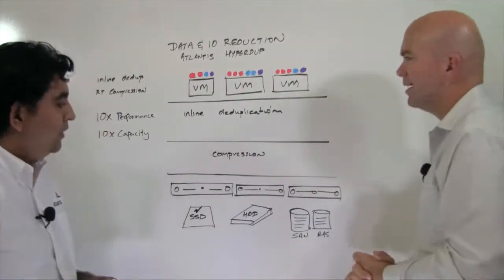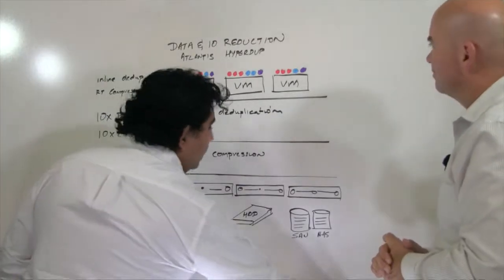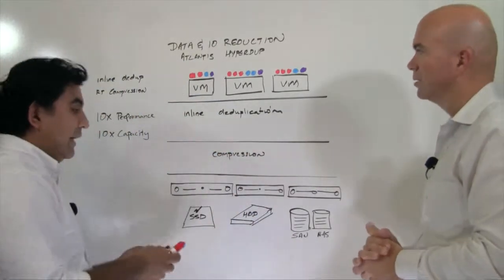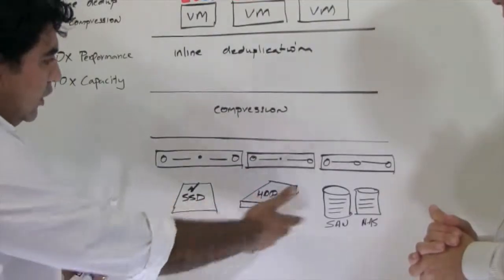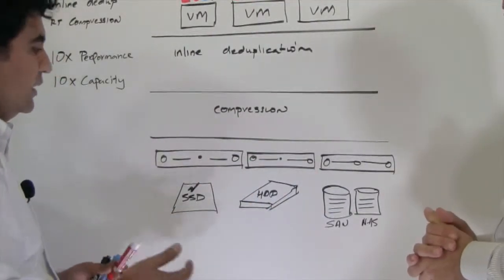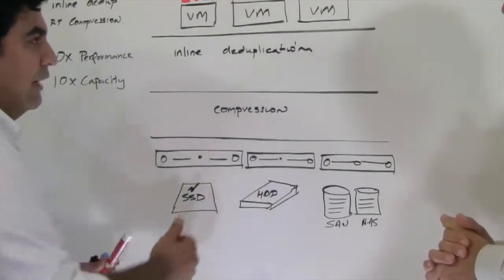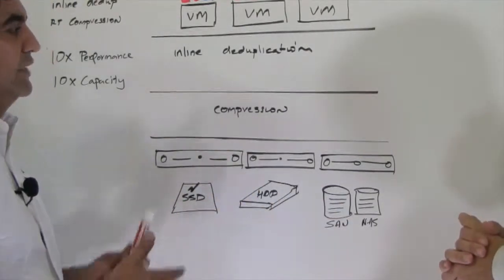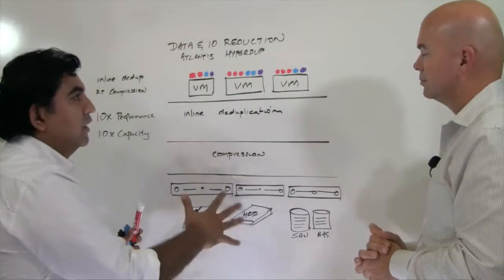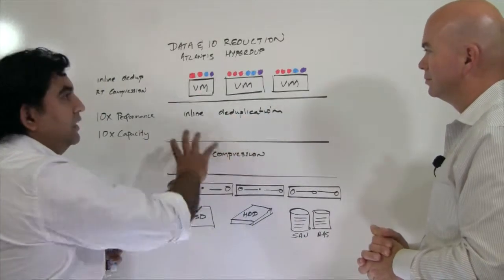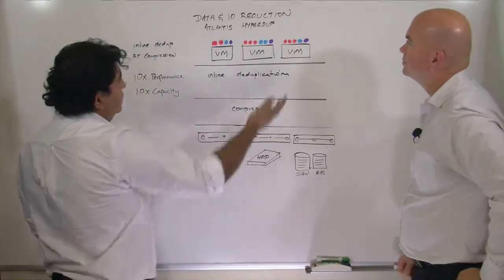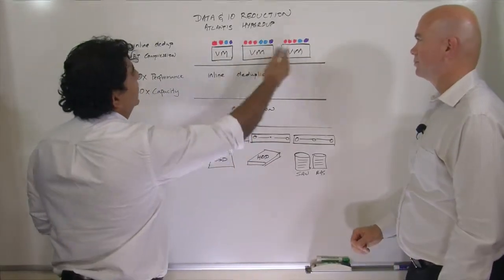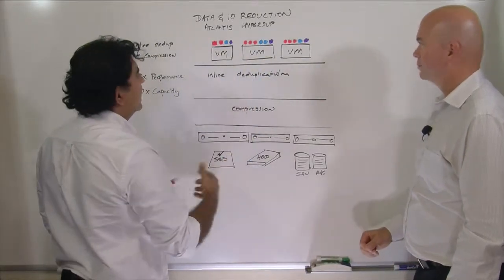Can you give me some ideas of what you mean by that? Sure. Let's walk you through the typical life of an I/O inside an Atlantis USX storage system. You can use any kind of storage with USX. You can have flash, spinning disks, traditional SAN NAS. It doesn't really matter. We virtualize all of this and our data services sit on top of that. A couple of those important data services are deduplication and compression. So in this drawing over here, what I have is a bunch of VMs that are running on top of Atlantis USX.